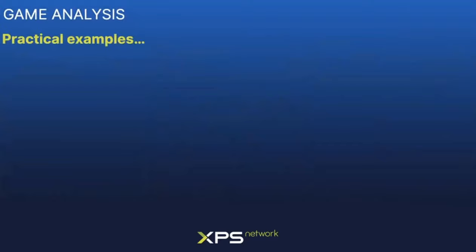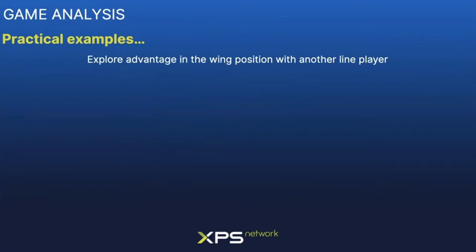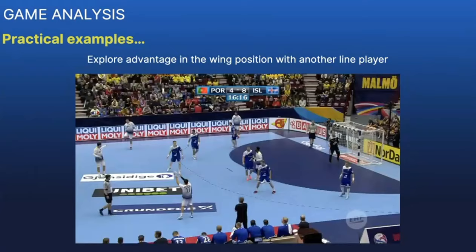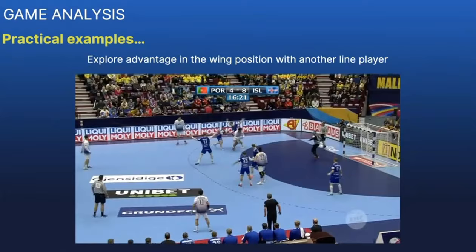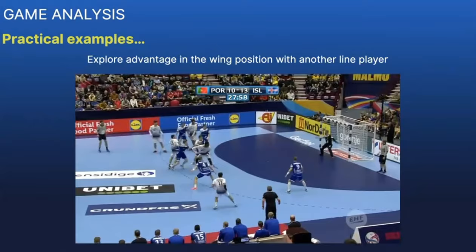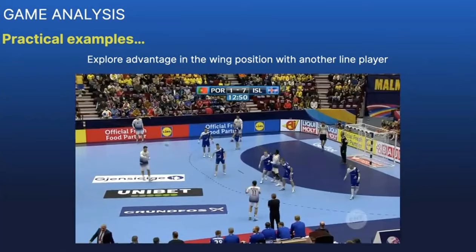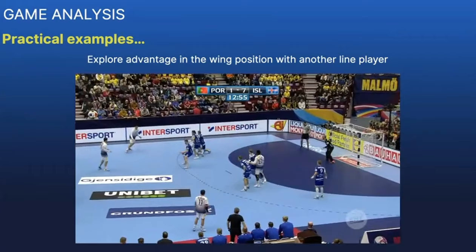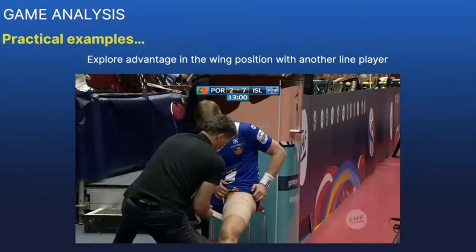Here I will present some examples of situations that were prepared based on information taken from our analysis. In this first example, we saw some weaknesses and tried to exploit height differences with the wing defender, putting another pivot in the wing position. We tried to see how the defender reacts. He does not always try to score from that position, but at least we can force a reaction and open opportunities to score from other positions.